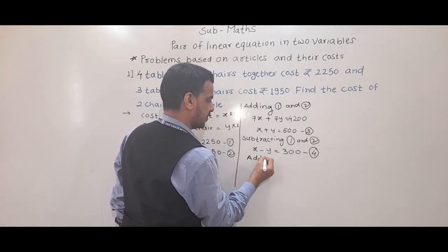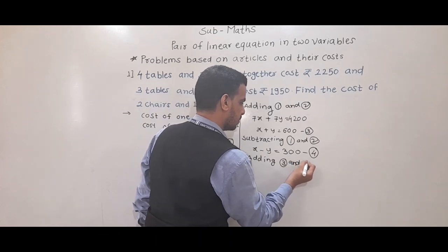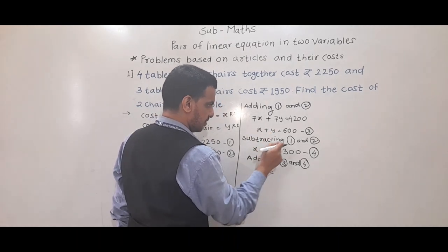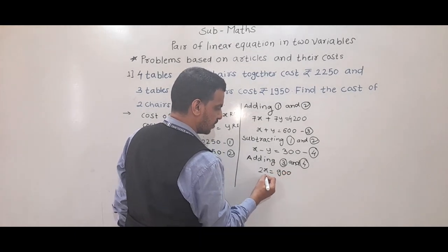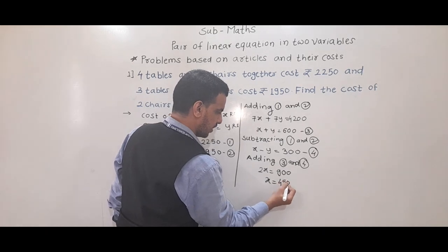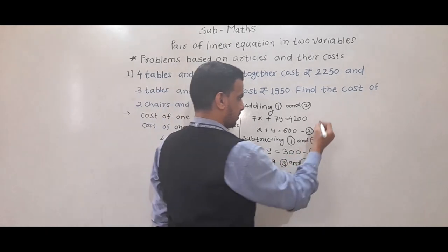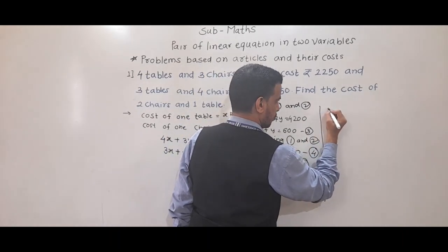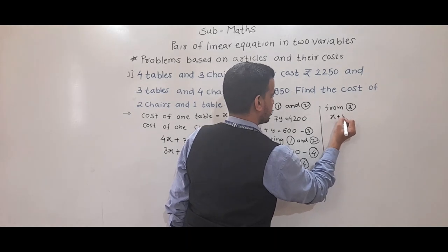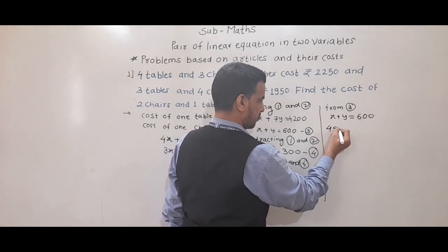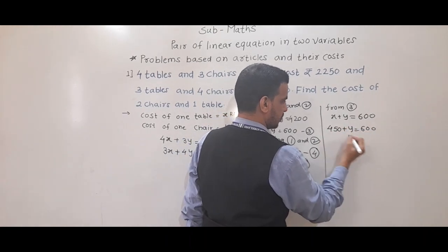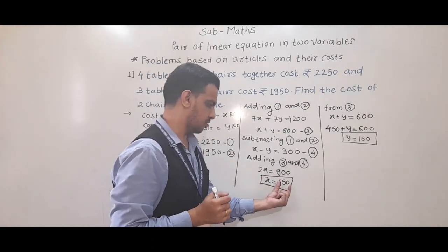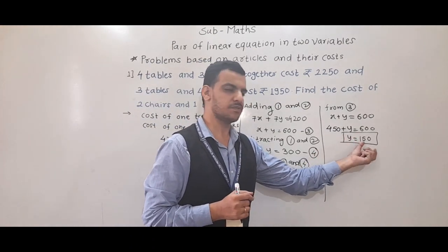Adding equations 3 and 4: 2x equals 600 plus 300, which is 900, so x equals 450. Substituting x equals 450 into equation 3: 450 plus y equals 600, so y equals 600 minus 450, which is 150. So the cost of 1 table is 450 rupees and the cost of 1 chair is 150 rupees.